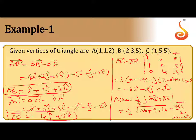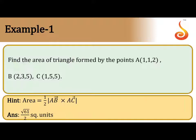Find AB vector, find AC vector, find the cross product between 2 vectors, and apply the magnitude to get the area of the triangle. Hoping clear everyone. Find AB vector, AC vector, cross product, and answer will be root 61 by 2. Check the answer. Root 61 by 2 square units is the answer.